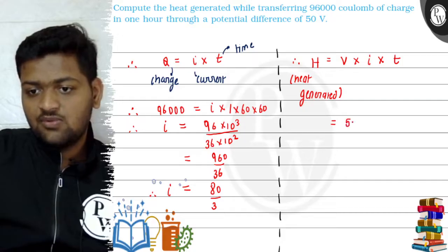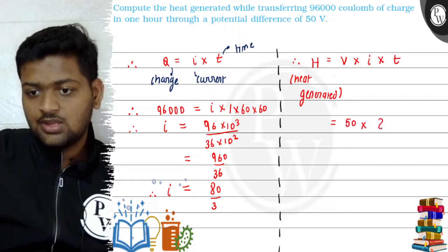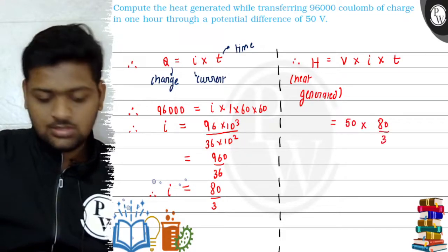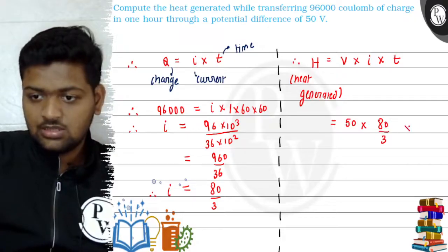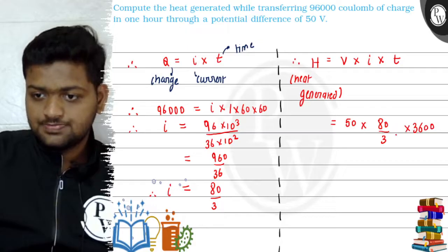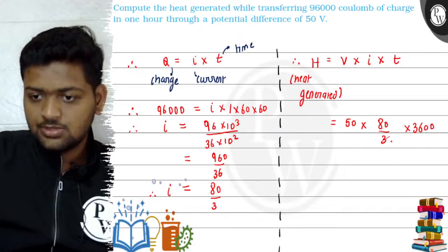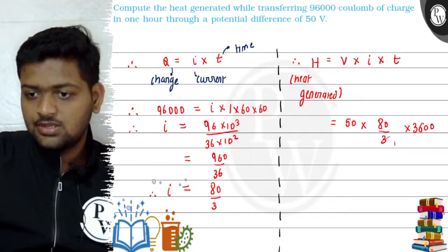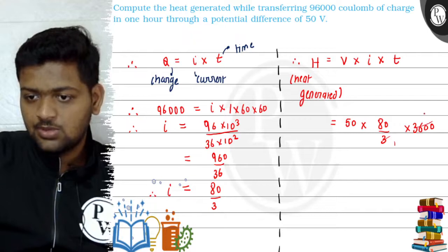So it is equal to 50 is our voltage into current 80 by 3 into time 3600 in seconds. Okay. So this will become 3 cancels, giving 1200.